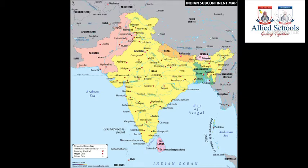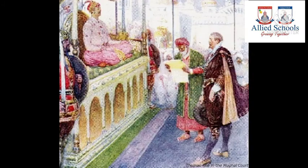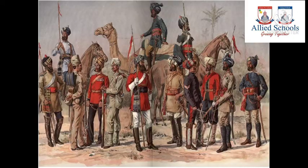From Europe, the Europeans came to the subcontinent by sea roads. Before that, trade was going on between the two regions by land road, also known as the Silk Road. The first Europeans to come to the subcontinent were the Portuguese.